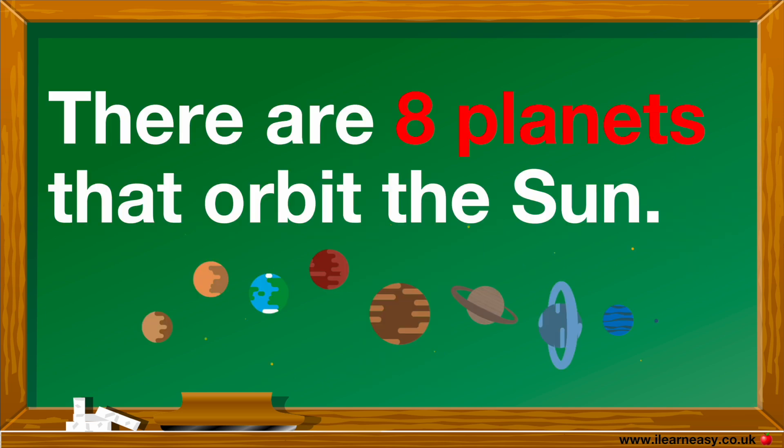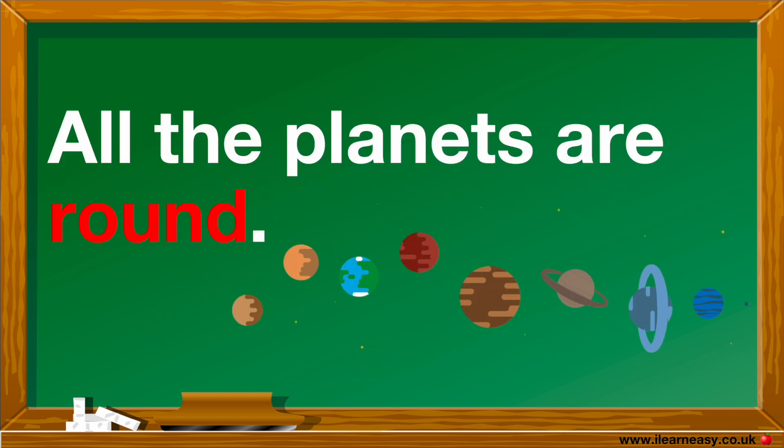There are 8 planets that orbit around the sun. All the planets are round due to the planet's gravities pulling equally from all sides.